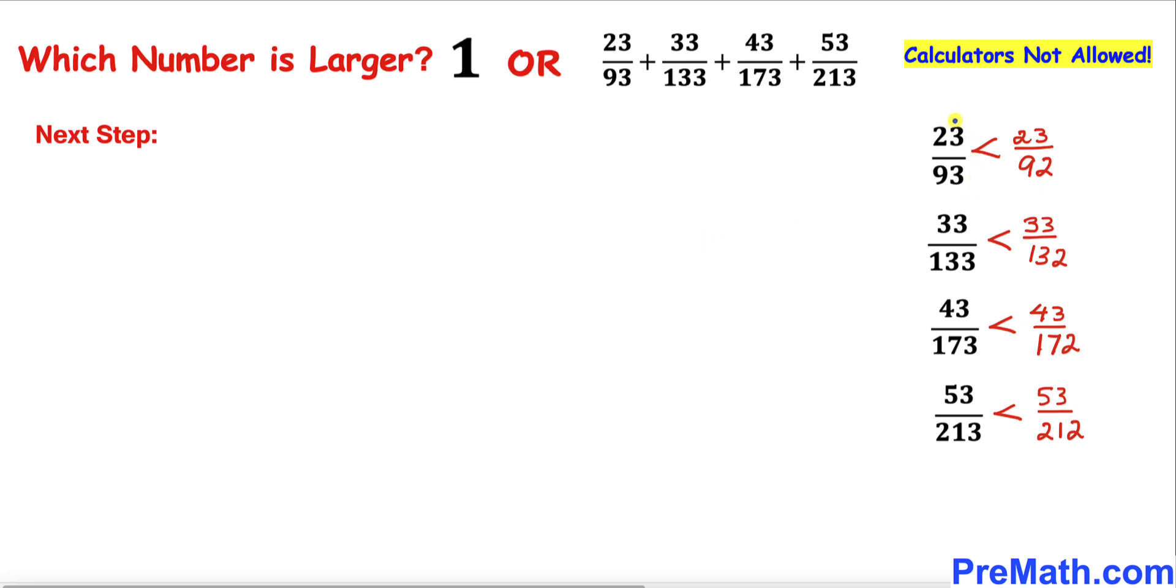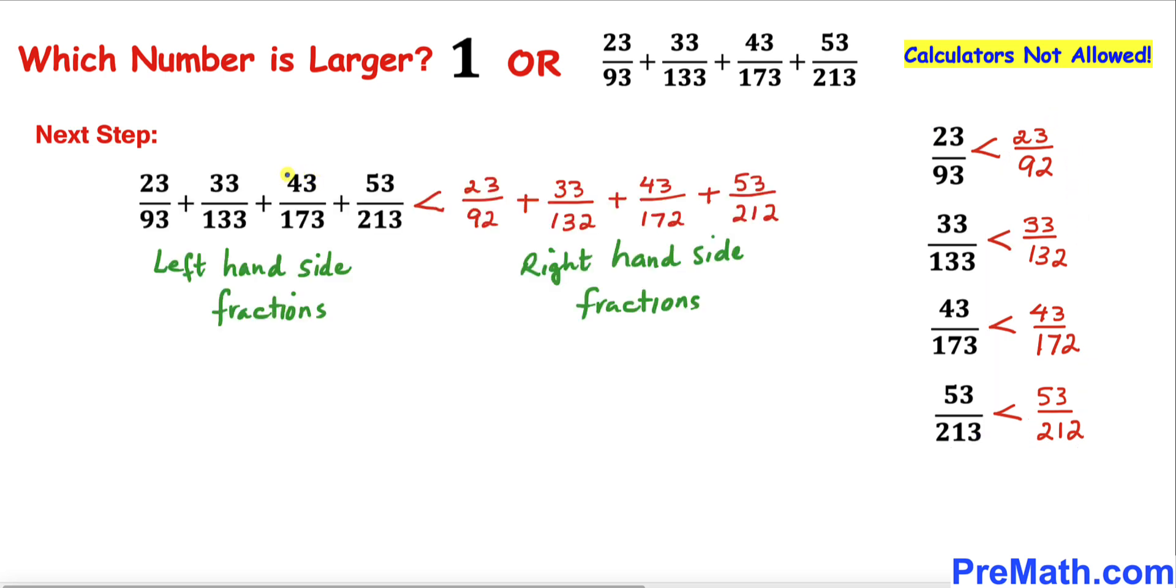And then add the fractions on the right-hand side as well. I have added the left-hand side fractions and the right-hand fractions. We can see that the right-hand side is larger than the left-hand side. Now we can see that this fraction reduces to 1/4.